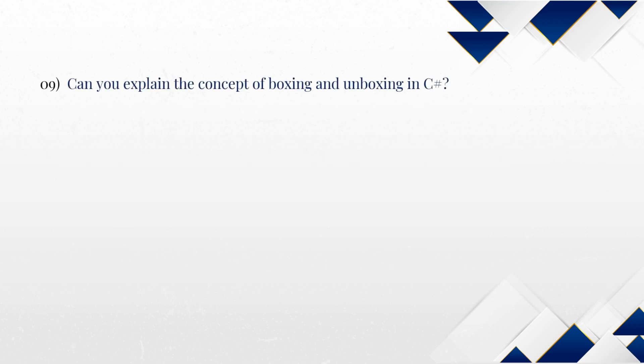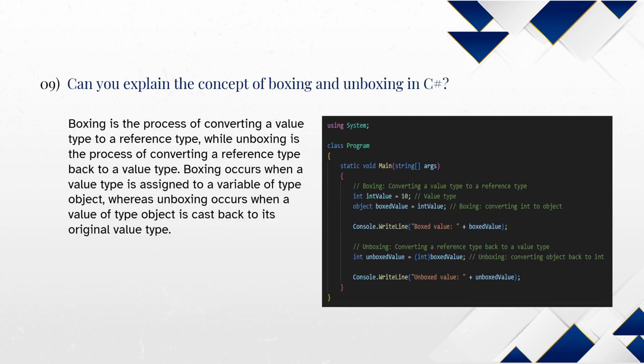Can you explain the concept of boxing and unboxing in C-Sharp? Boxing is the process of converting a value type to a reference type, while unboxing is the process of converting a reference type back to a value type. Boxing occurs when a value type is assigned to a variable of type object, whereas unboxing occurs when a value of type object is cast back to its original value type.